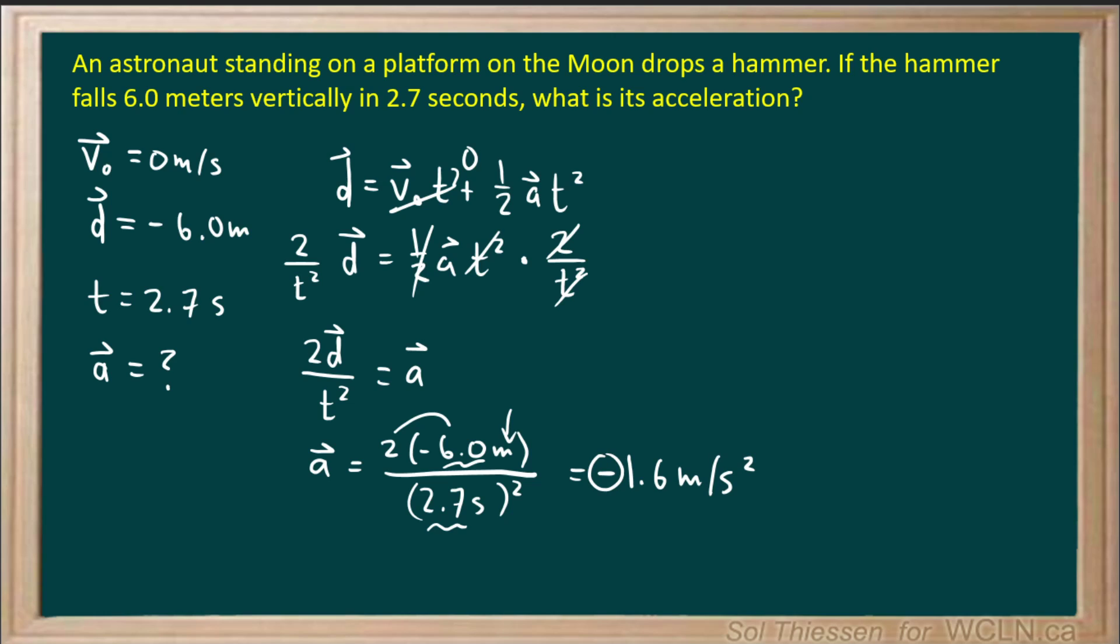This negative indicates the downwards direction of the acceleration. So we know that the acceleration will be towards the surface of the moon, which we consider to be downwards in this displacement number. So if we just want the magnitude of the acceleration, we can take the magnitude of this number, 1.6 meters per second squared.